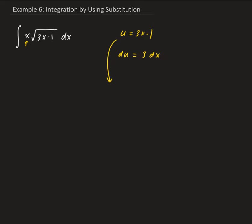Solving the substitution u = 3x - 1 gives us 3x equal to u plus 1, and from here we can isolate x. So x is going to be equal to one third times (u plus 1). Now we have x in terms of u, so we can replace x in our integral.